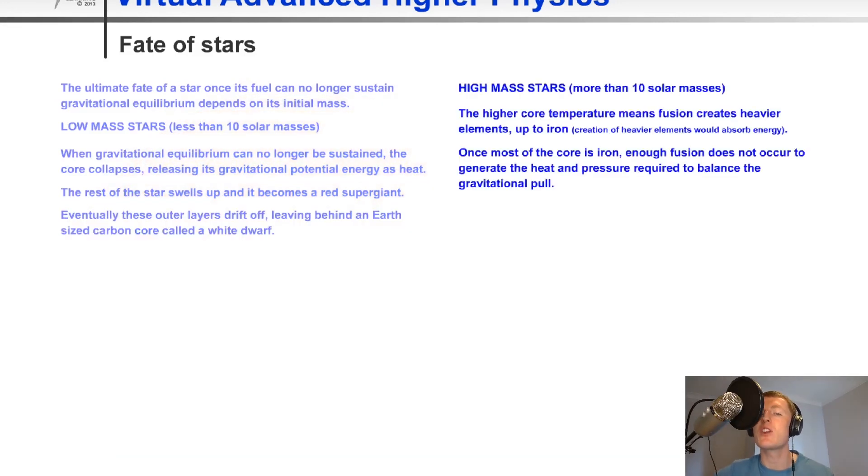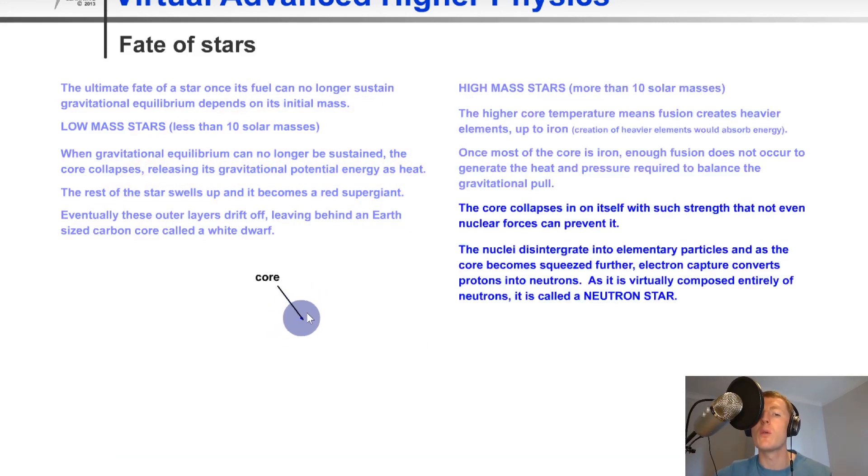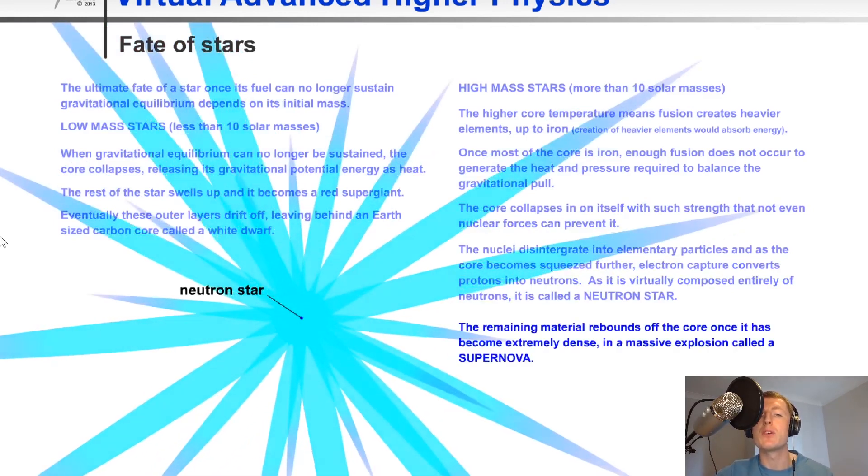However, for high mass stars, a similar thing happens to begin with. Our core will shrink, and then eventually we end up with a neutron star. And then what happens is we get a supernova produced from that.